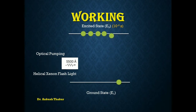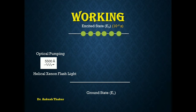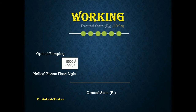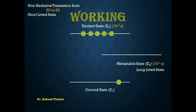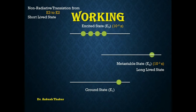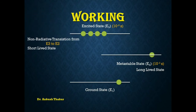The atoms are now at energy state E3, but the excited state is unstable. So what happens is that the unstable state causes a de-excitation of the chromium ions to the intermediate state E2, which is generally known as the metastable state. The lifetime of the metastable state is 10 to the power of minus 3 seconds. The transition from E3 to E2 is a non-radiative transition, and this metastable state is generally known as a long-lived state.